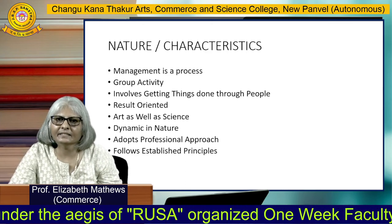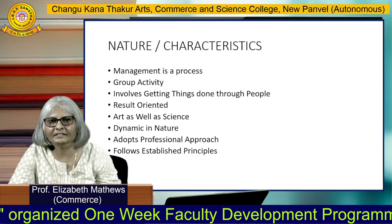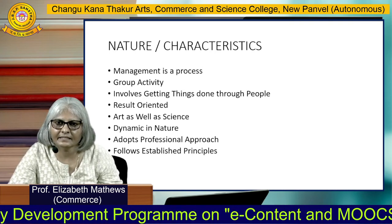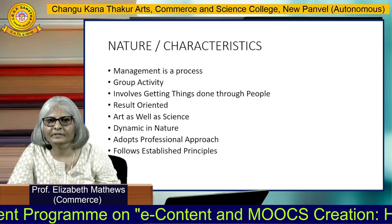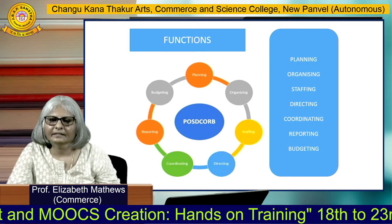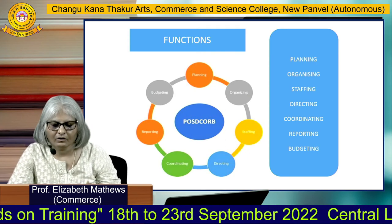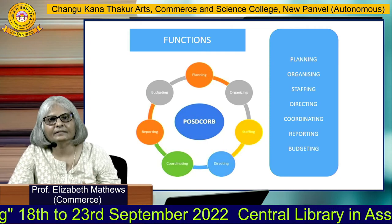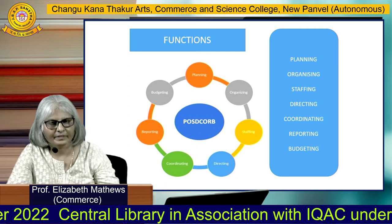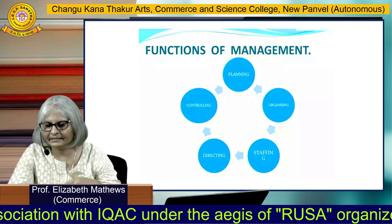To recap the nature and characteristics: management is a process, it is a group activity, it involves getting things done through people, it is result-oriented, it is an art as well as a science, it is dynamic in nature, it adopts a professional approach, and it follows established principles. There is also a coined word called POSDCORB — planning, organizing, staffing, directing, coordinating, reporting, and budgeting — covering the functions of management.